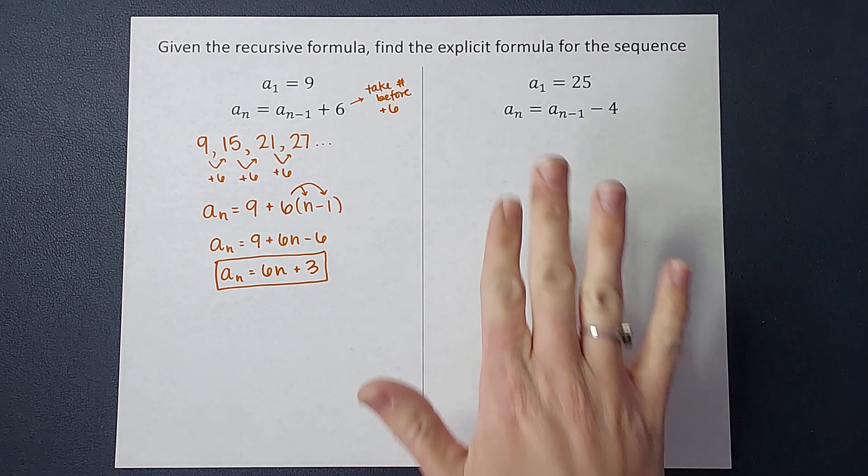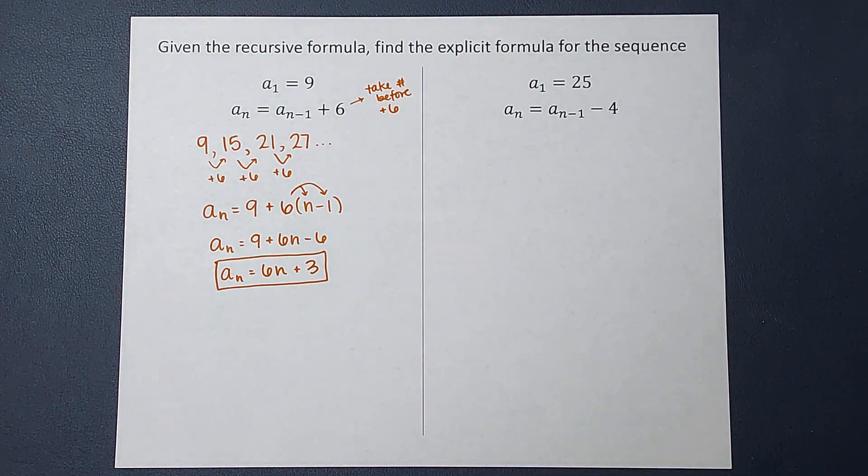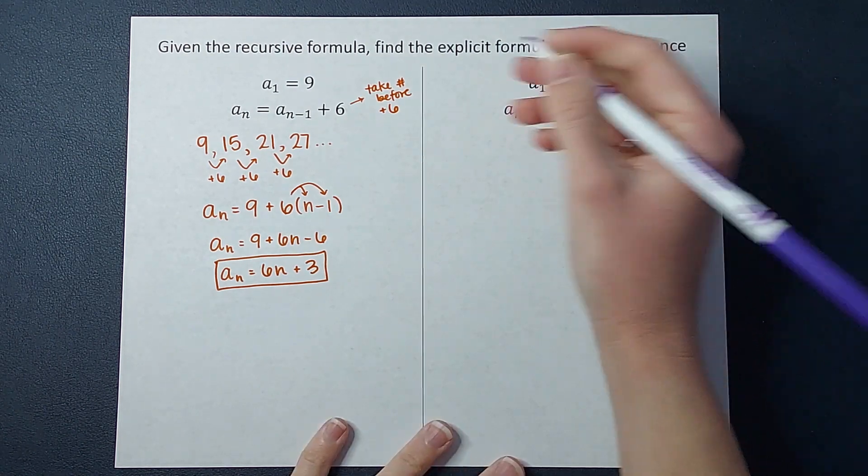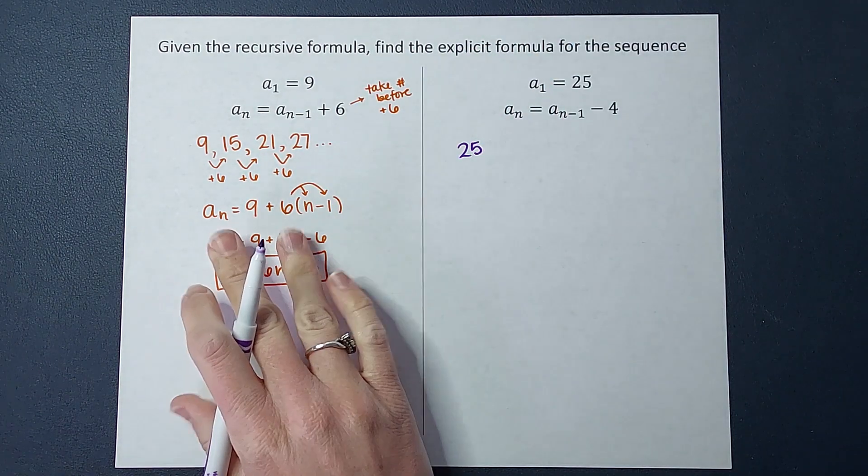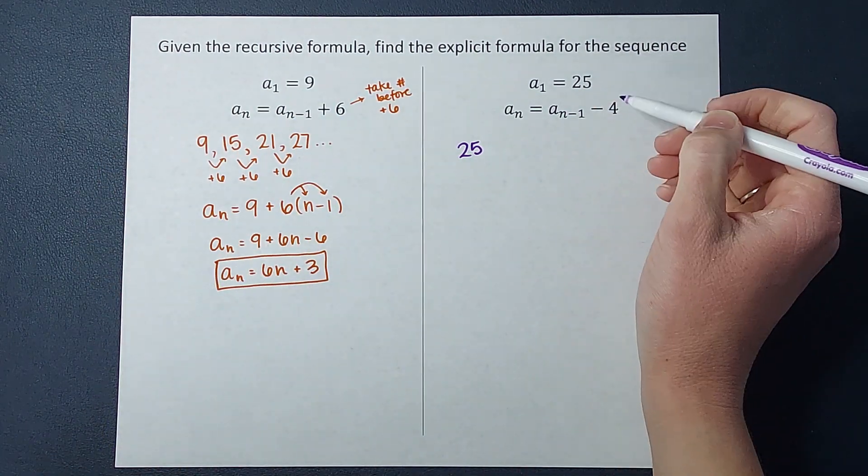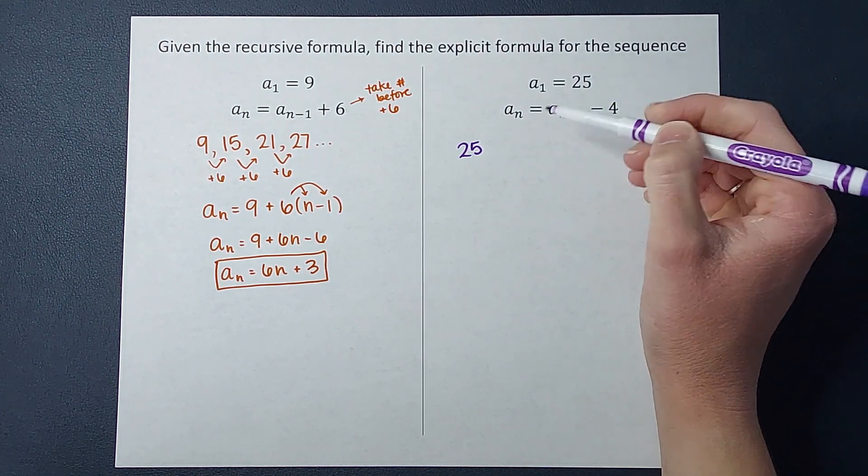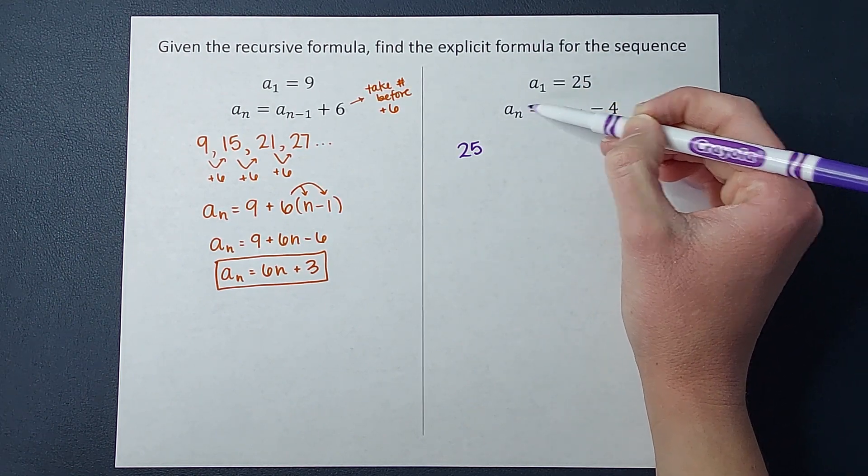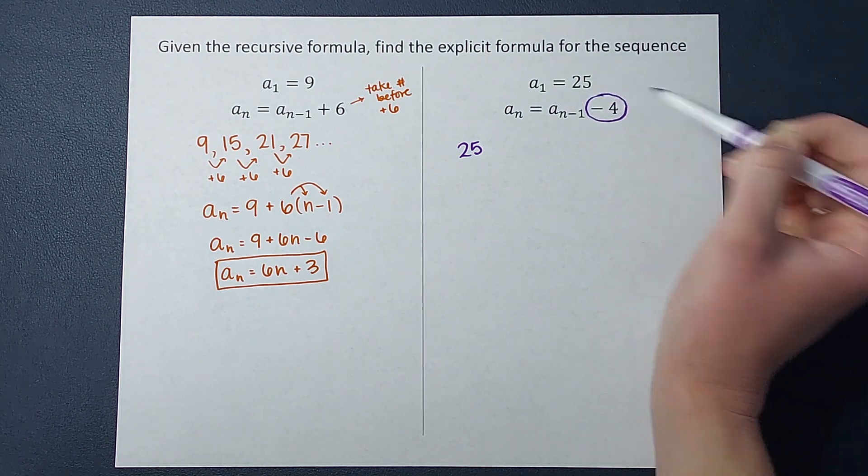Alright. Let's look at this second one. So I already know my first term is 25. Now because we've already done it we may not need to do as many steps as before. Because when I look at this I can tell whatever number I want to find, take the one before it and subtract four.